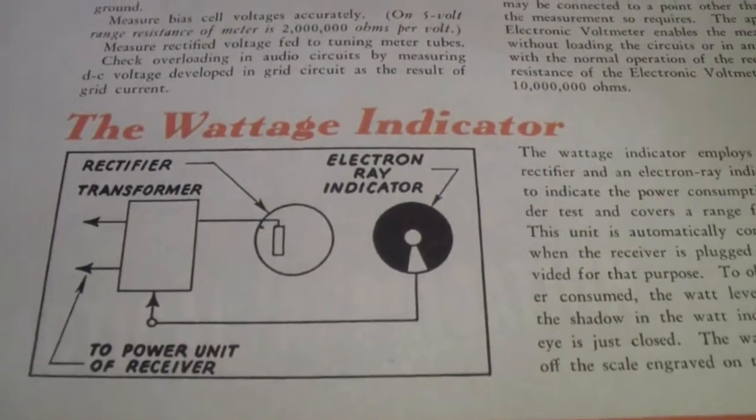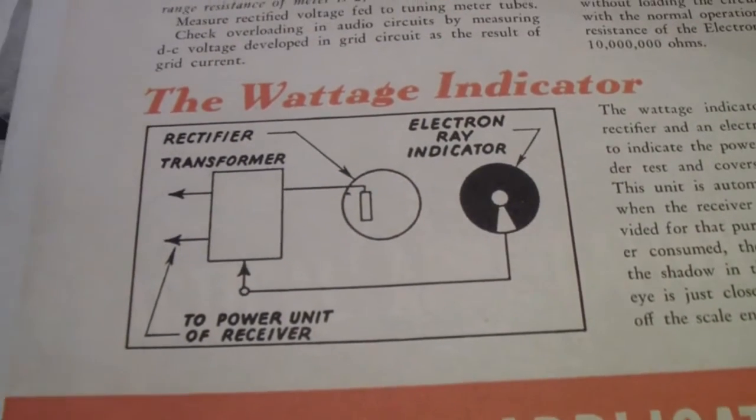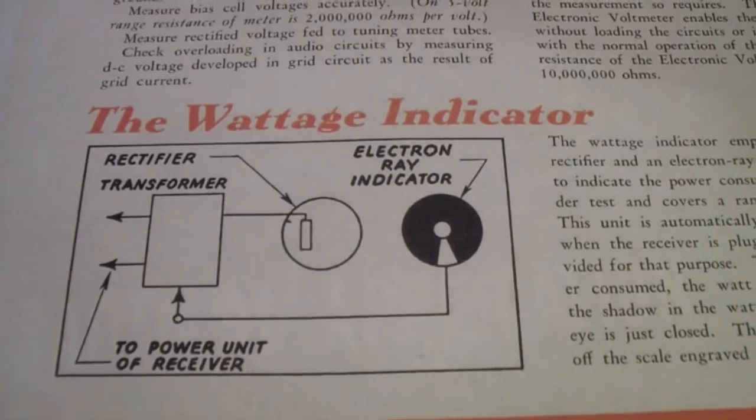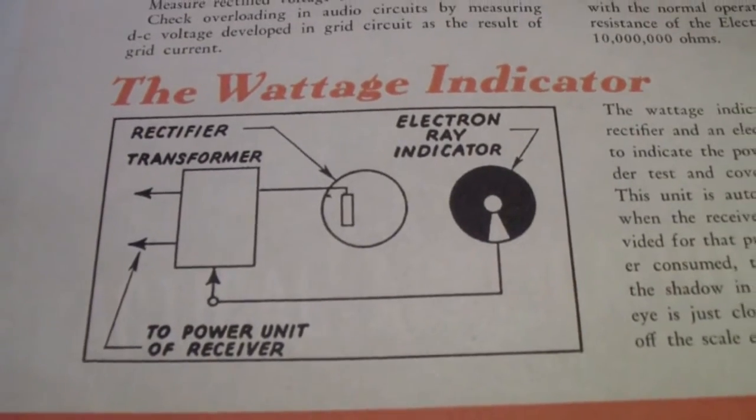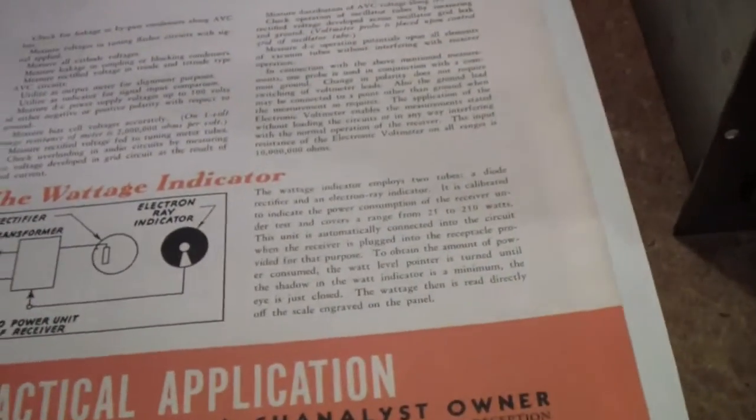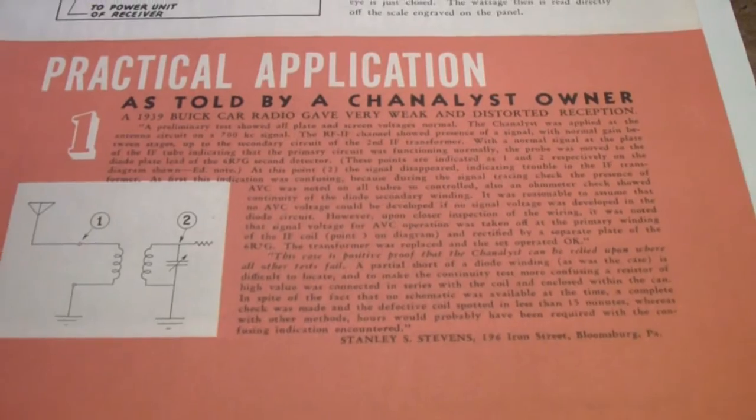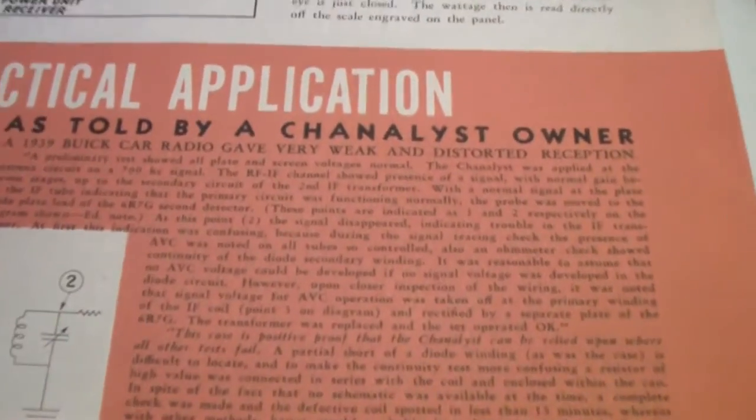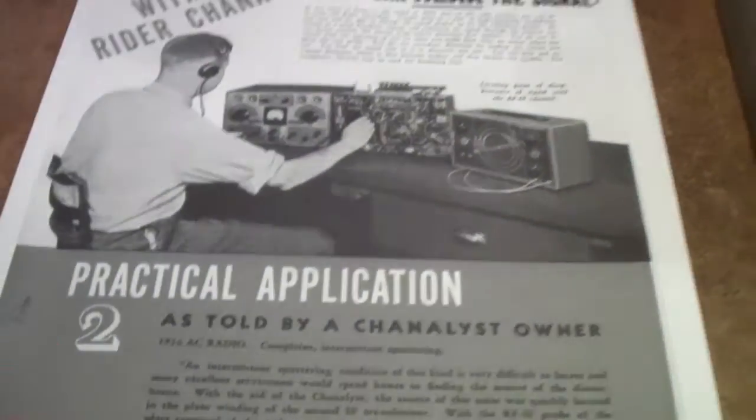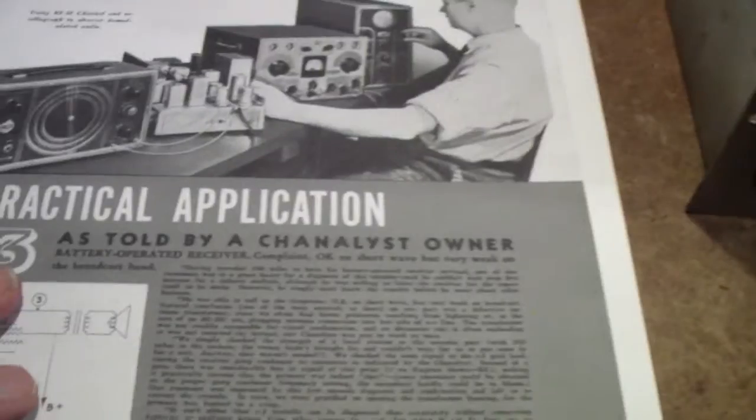And finally, it has the wattage indicator. That is, you plug the unit into the front panel connector, and you adjust a control until you get a balance on the eye tube, at which time you know how much wattage the unit is consuming. As you can tell, the rest of this note is war stories, if you will. Practical application as told by a Channelist owner, and so on. And some more marketing kind of material.